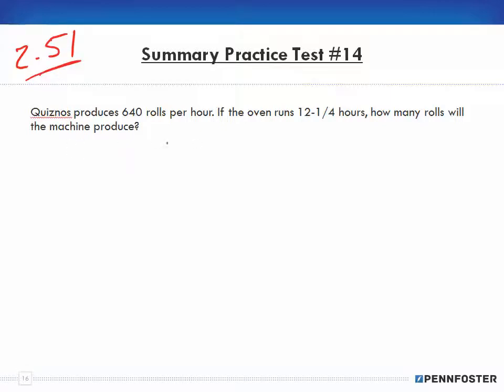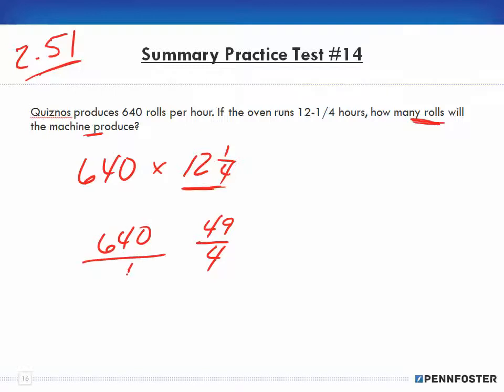So if I have 640 rolls an hour and it's running at 12 and a quarter hours, how many rolls will the machine produce? I need to multiply 640 rolls by 12 and a quarter hours. Since this is a mixed number, we need to convert it into a fraction. So 4 times 12 is 48 plus 1 is 49 over 4, and 640 is a whole number so I put it over 1. Now I can reduce.